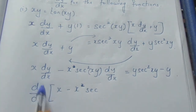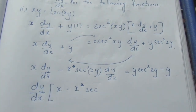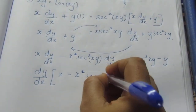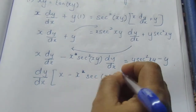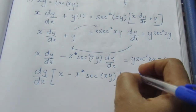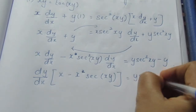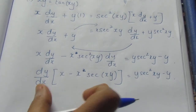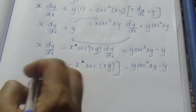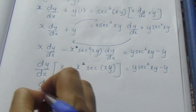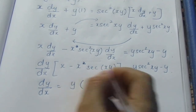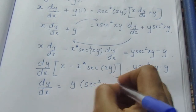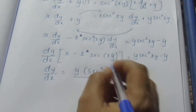To isolate dy/dx, we factor it out from the left side. So dy/dx times (x minus x squared sec squared(xy)) equals y sec squared(xy) minus y. Factoring y on the right: dy/dx equals y times (sec squared(xy) minus 1) divided by x times (1 minus x sec squared(xy)).